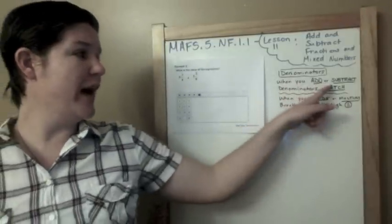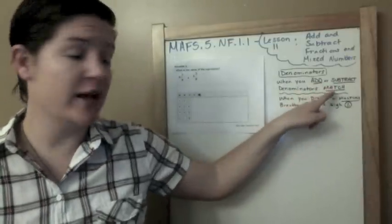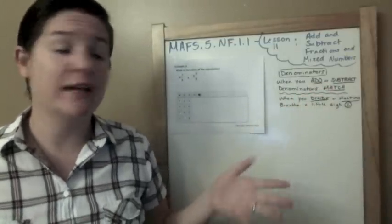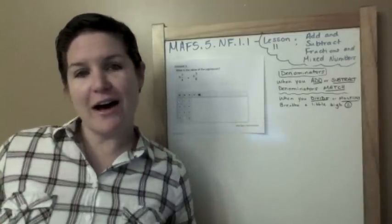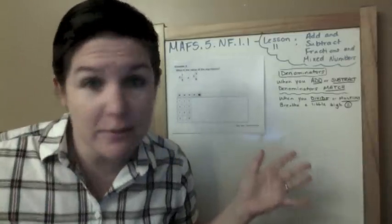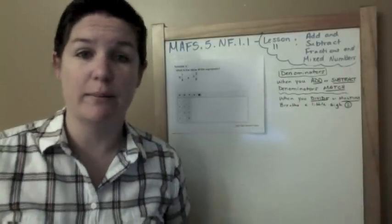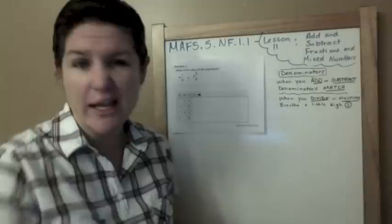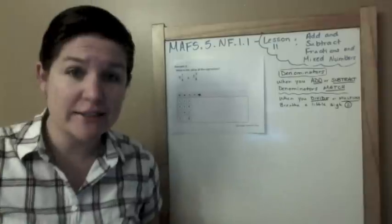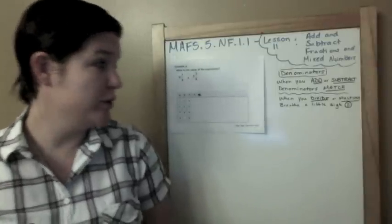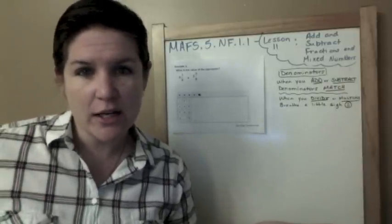So in today's lesson, our denominators need to be the same. Because when you add or subtract, denominators match. When you divide or multiply, breathe a little sigh of relief. So what does this mean? When you add or subtract fractions, your denominators must match. But when you're dividing or multiplying, you can breathe a little sigh because they don't need to match. You can just go straight across. Of course, you have a little bit more work to do when you're dividing, but we will get there in a later lesson down the road.